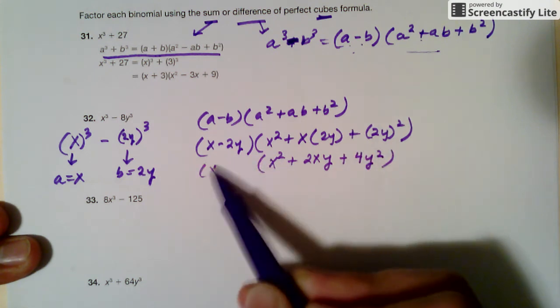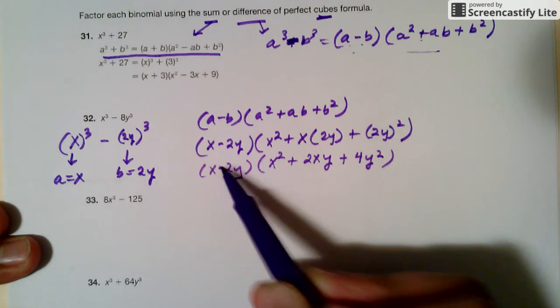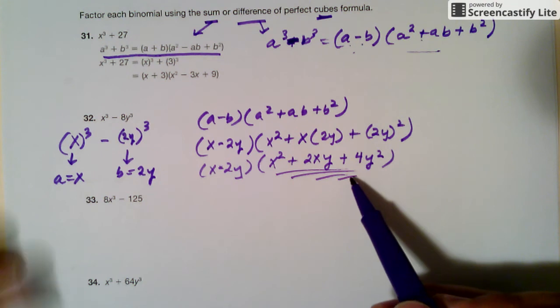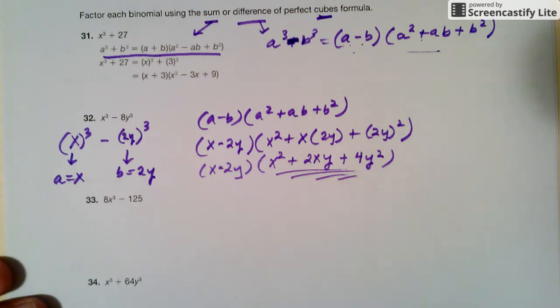And then out here is x minus 2y. And so with the sum and difference of cube, and usually this piece, I wouldn't even worry about factoring that anymore, because it's not factorable at that point.